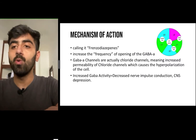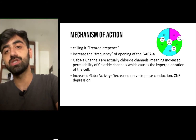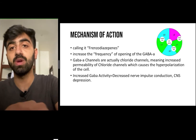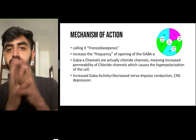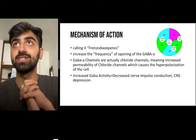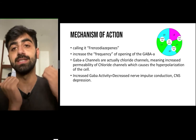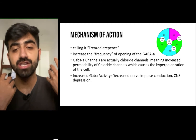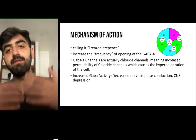Why do we need decreased nerve impulse conduction? We need it in conditions where we want less action potential to travel — conditions where we want CNS depression, decreased sensory supply, and decreased action potentials being carried to and from the neuron.